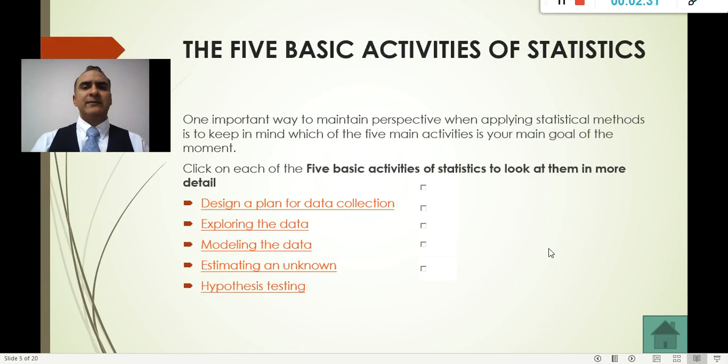Then we're going to look at the five activities of statistics. In the five activities of statistics, we're looking at the process. First of all, the five activities are: design a plan for data collection, exploring the data, modeling it, estimating an unknown, and hypothesis testing. First, design a plan for data collection. In a nutshell, we have to think what kind of information we're going to collect, where are we going to collect it, how many numbers we need to collect.